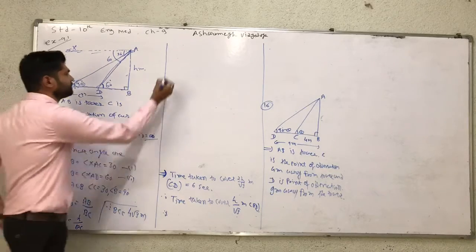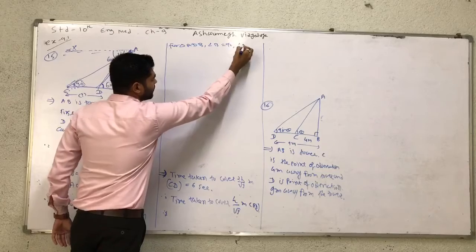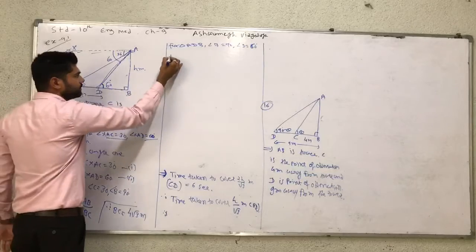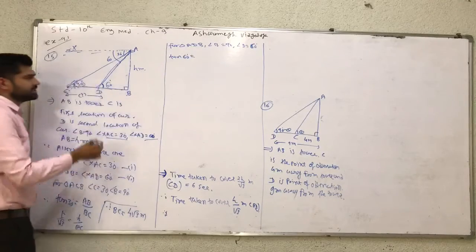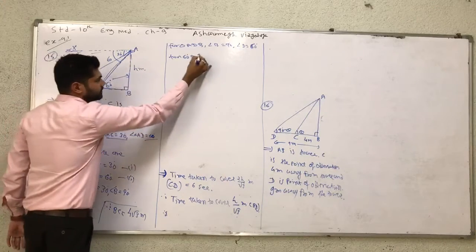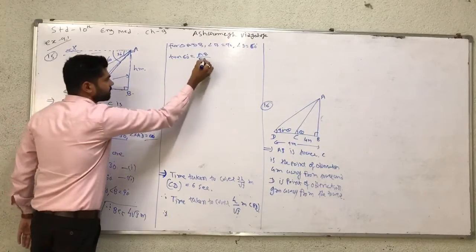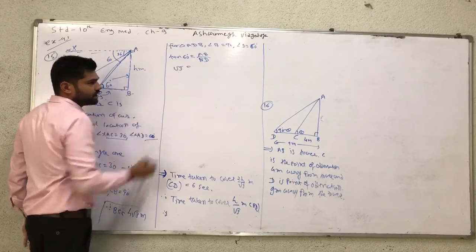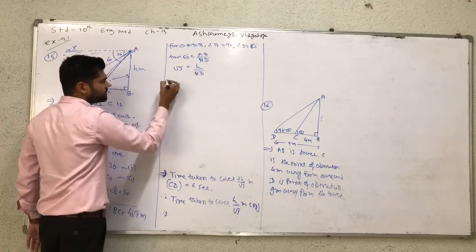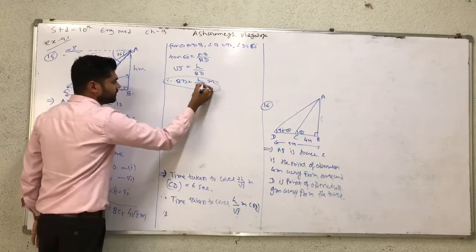Now for the second triangle, for triangle ADB, angle B is equal to 90 degrees and angle D is equal to 60 degrees. Therefore using tan 60, opposite side upon adjacent side — opposite side of angle D means AB, divided by adjacent side means DB. Under root 3 equals H divided by DB, therefore DB is equal to H upon under root 3 meters.